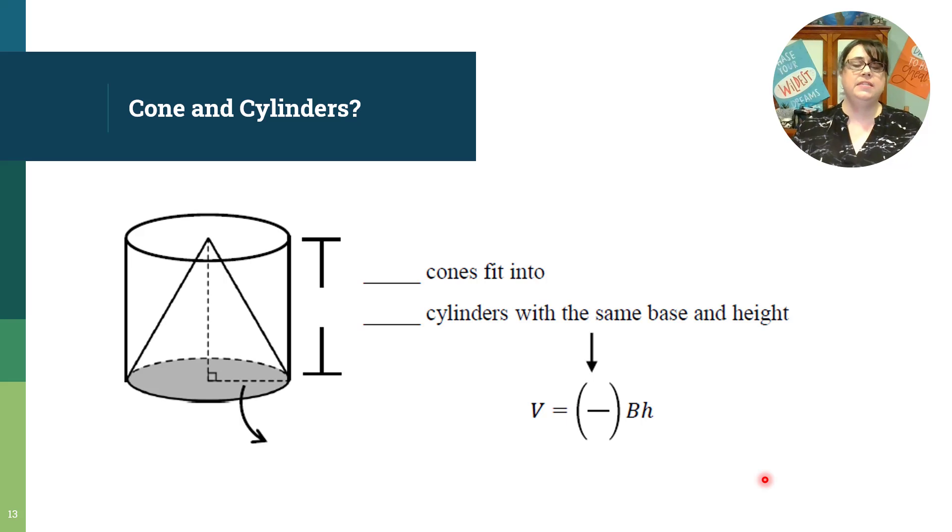So cones and cylinders. We actually use the idea of a cylinder to help us get ready to talk about the volume of a cone. Imagine a cylinder that fits perfectly inside of a cone. That means that the base area is exactly the same and the height is exactly the same. So they have the same radius and they have the same height. And the question is how many cones fit into it?